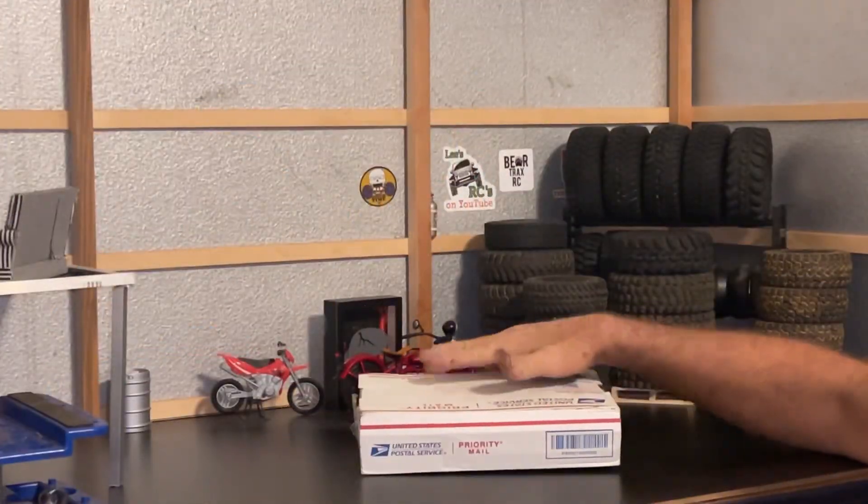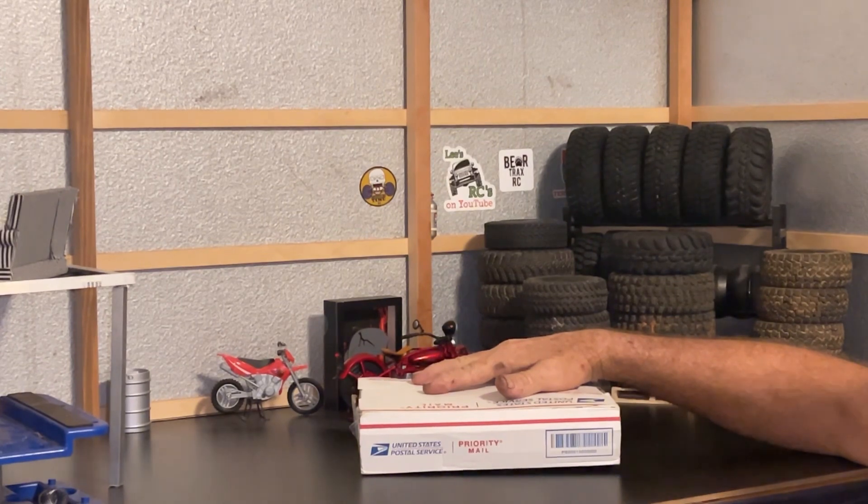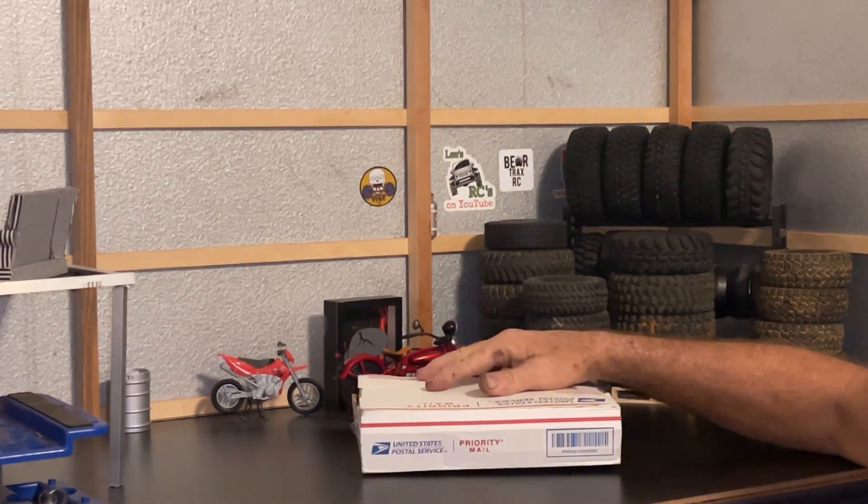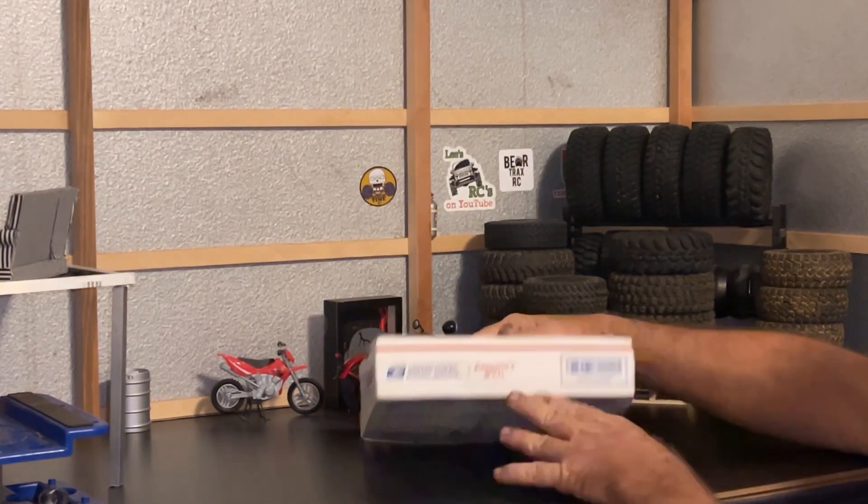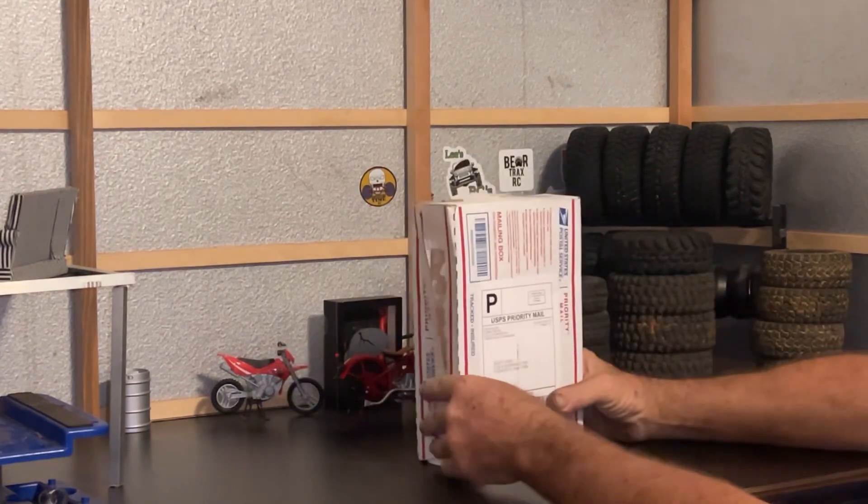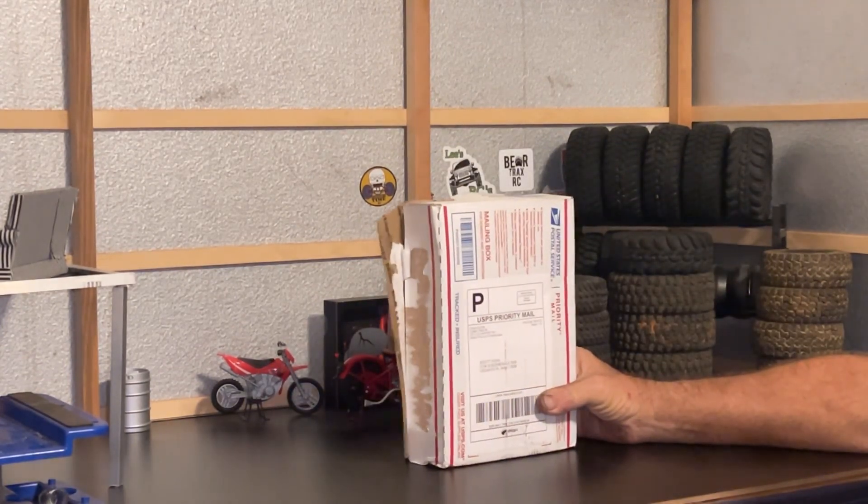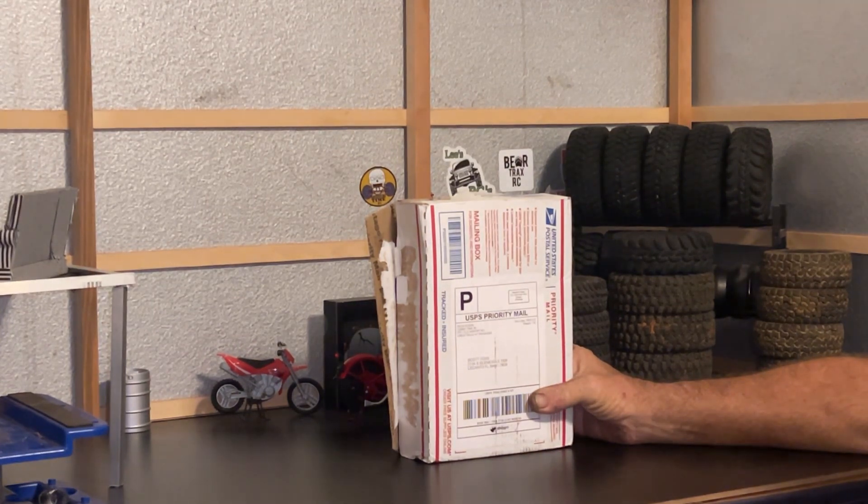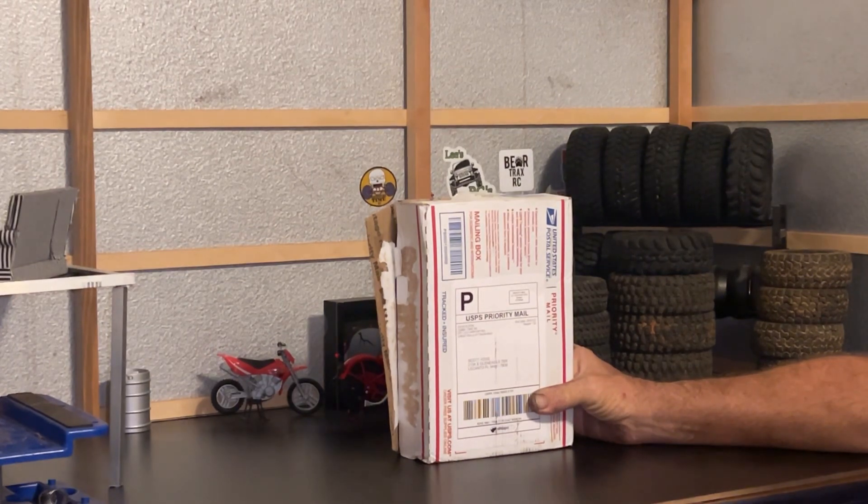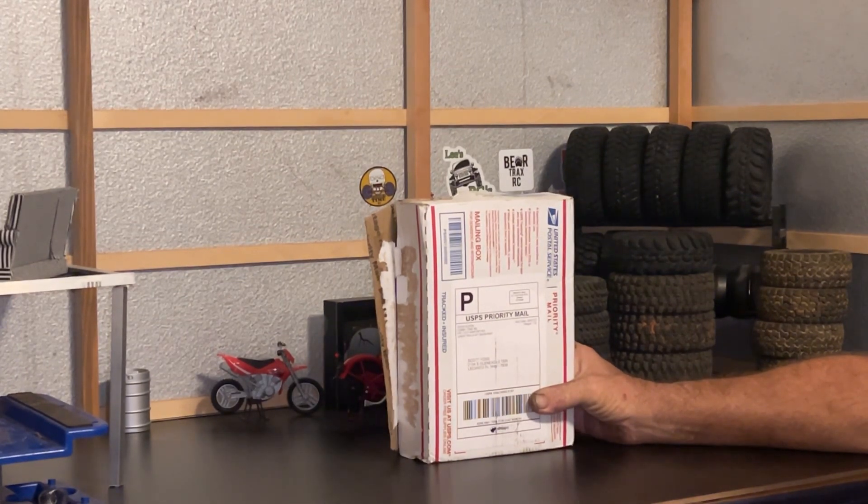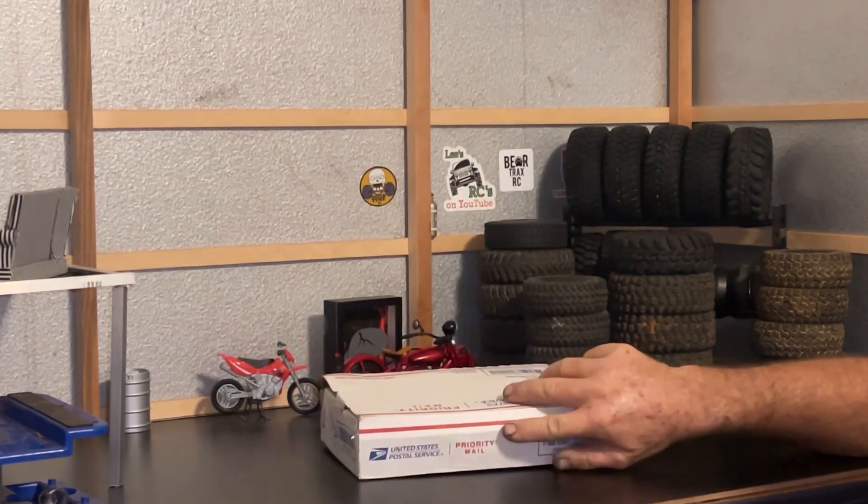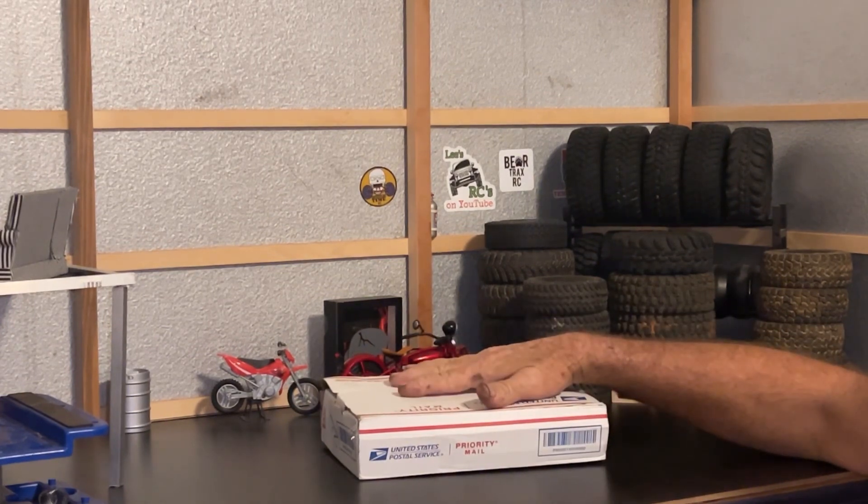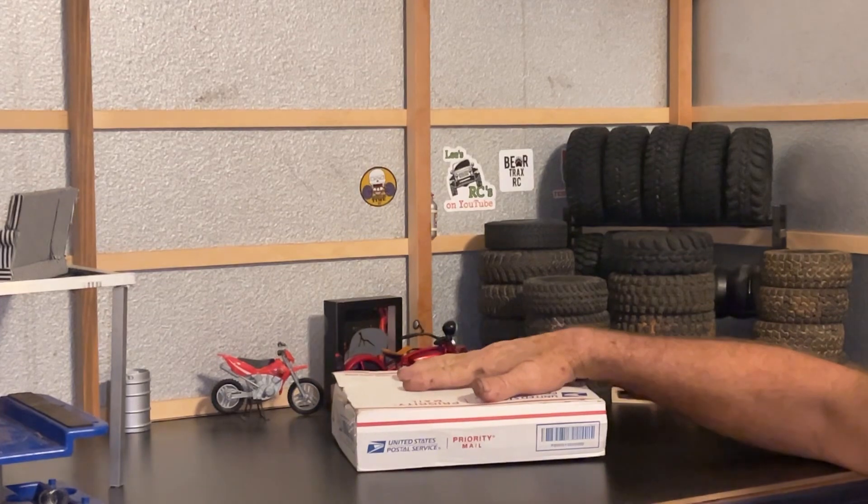Alright everybody, as you guys can see we got a box, priority mail. This thing is from Hobbytime RC out in Great Falls Montana. This is not a paid thing or anything like that. My subscriber purchased this direct from them and had them ship it direct to me. What's in this box, some of it's actually going to go for the TF2.